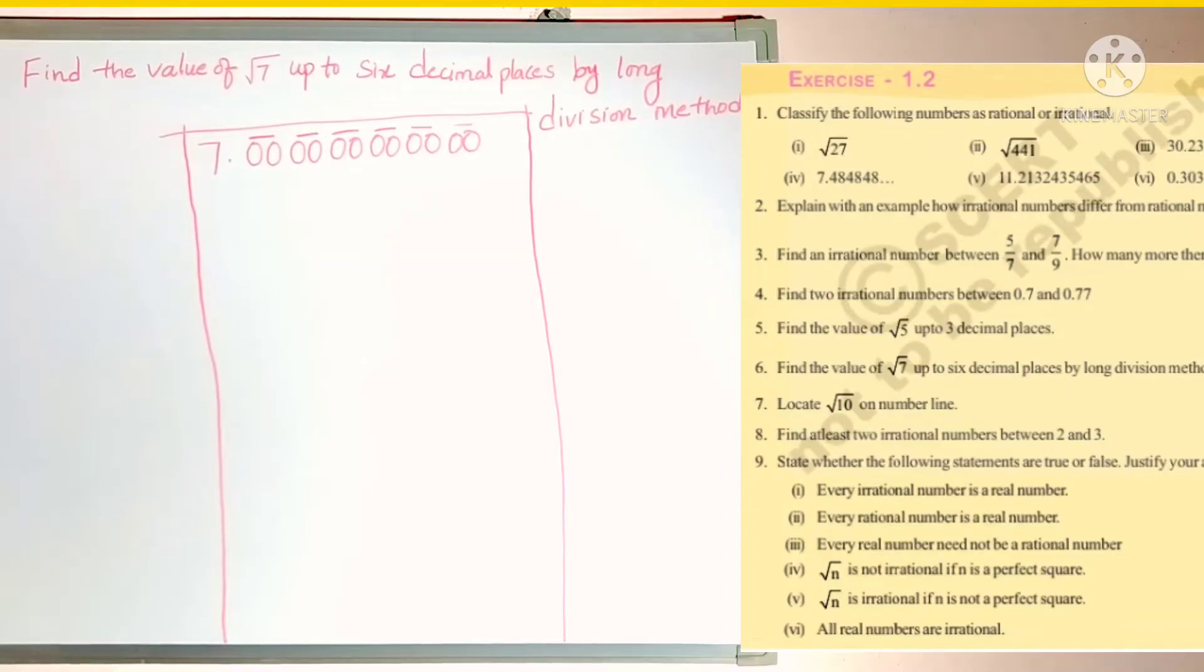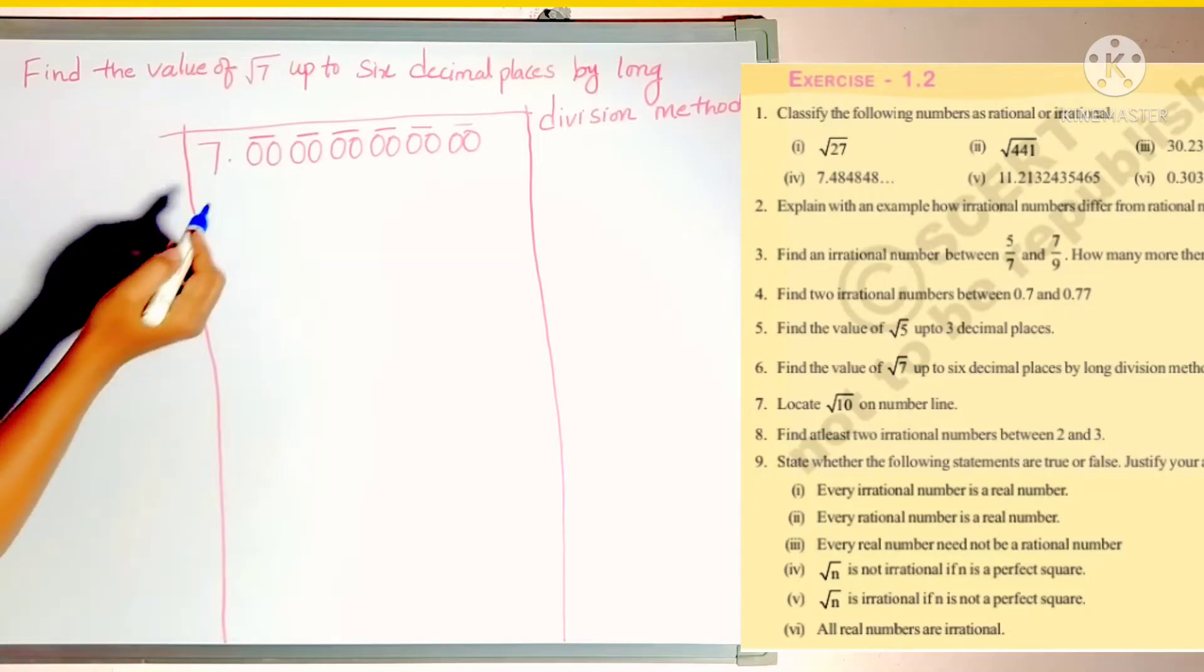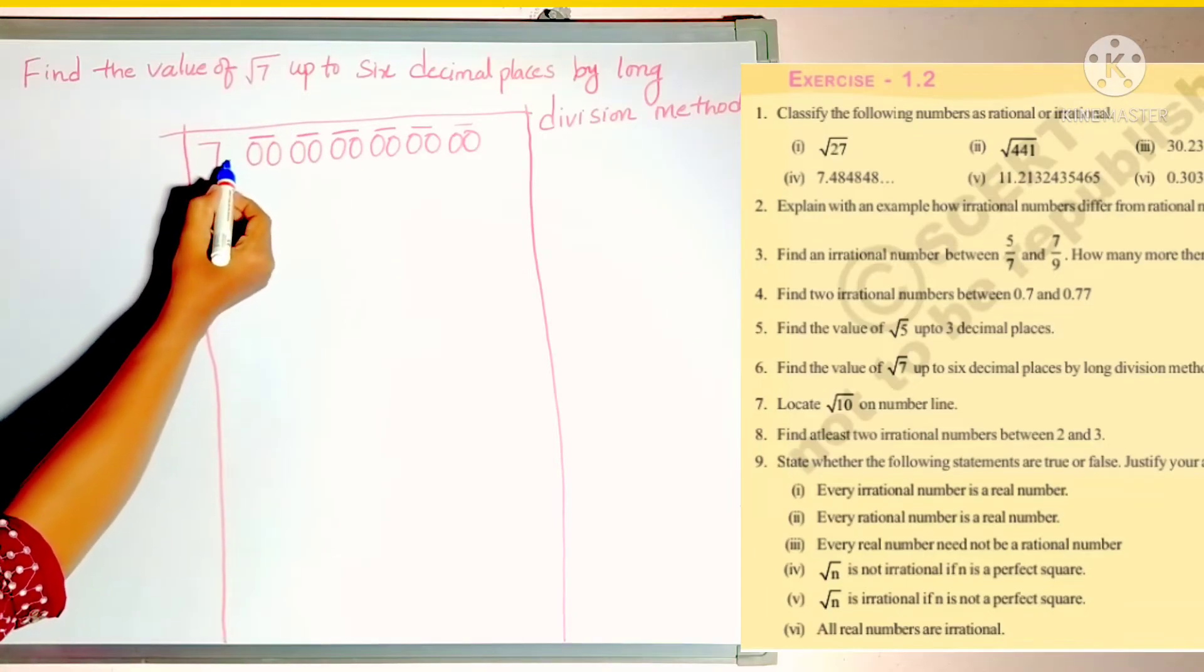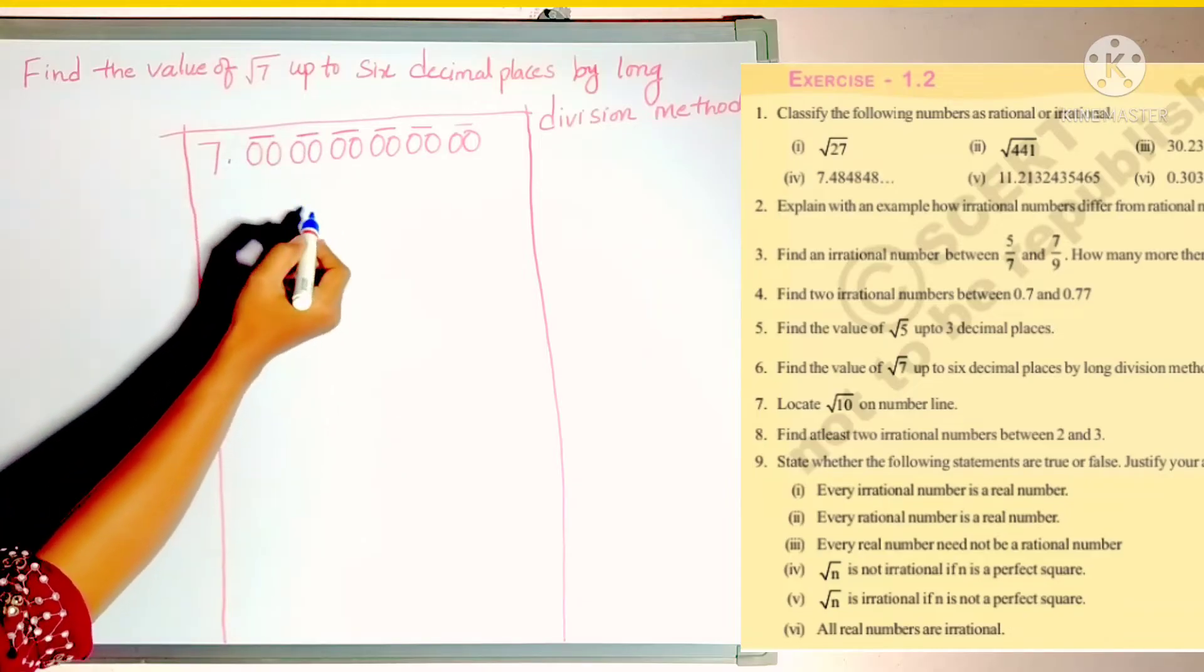Hello students, welcome to my channel. Today we will see a sixth problem in exercise 1.2 of real numbers chapter. The problem is find the value of root 7 up to 6 decimal places by long division method. So here they asked up to 6 decimals. So write 7 first and put the decimal point and up to 7 write 6 pair of zeros.